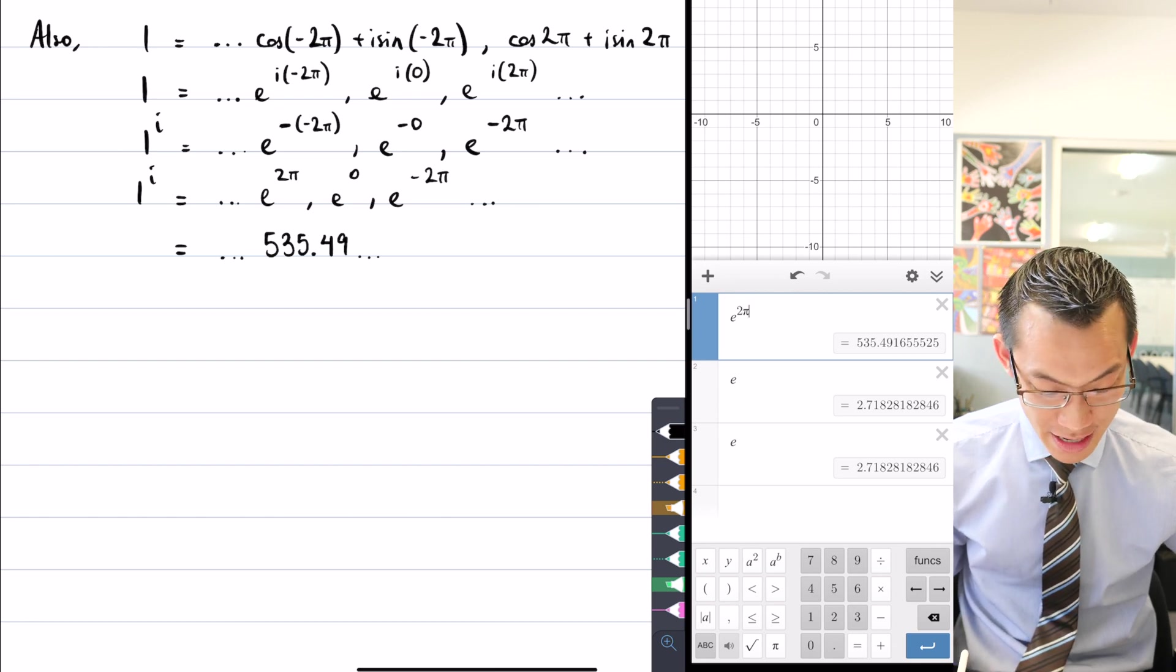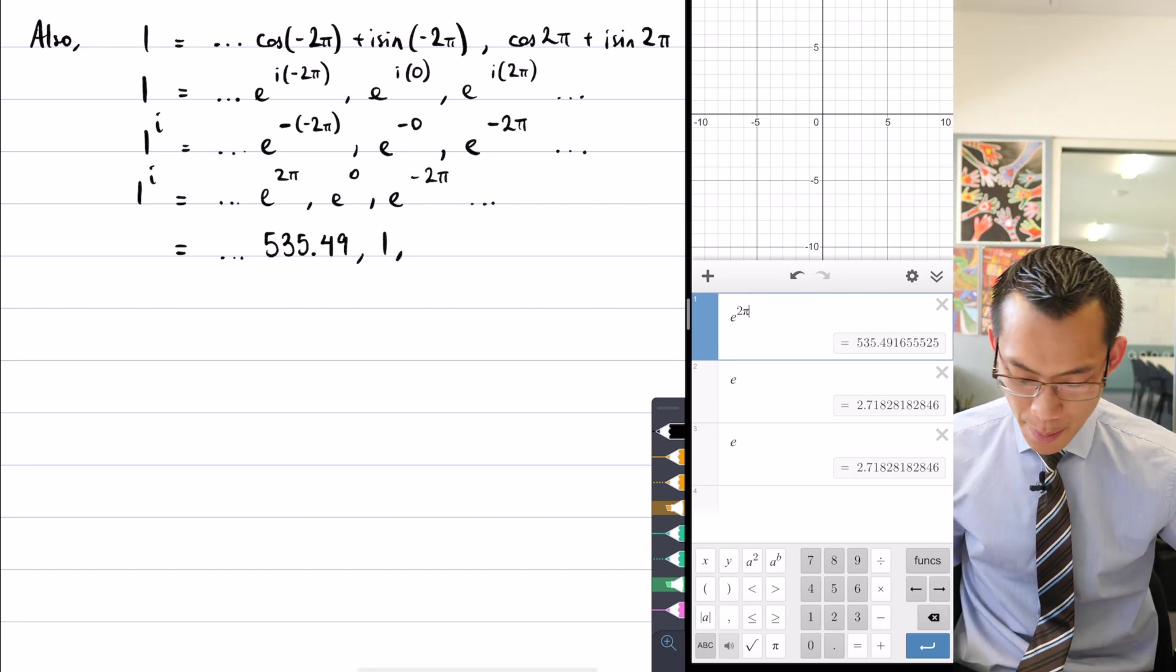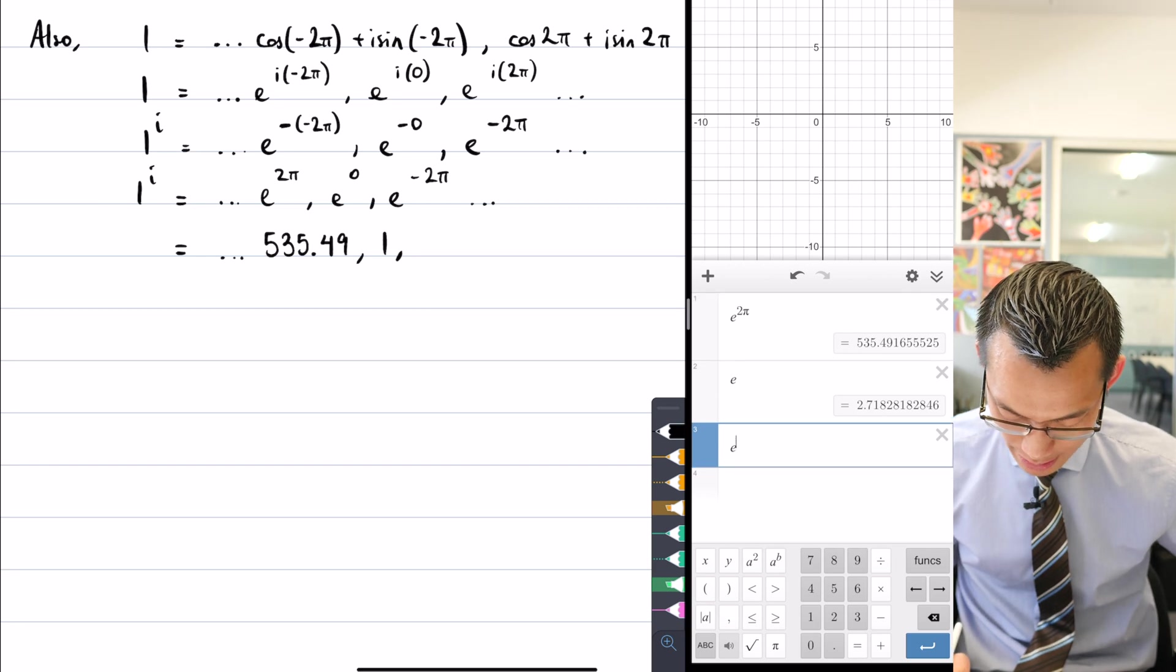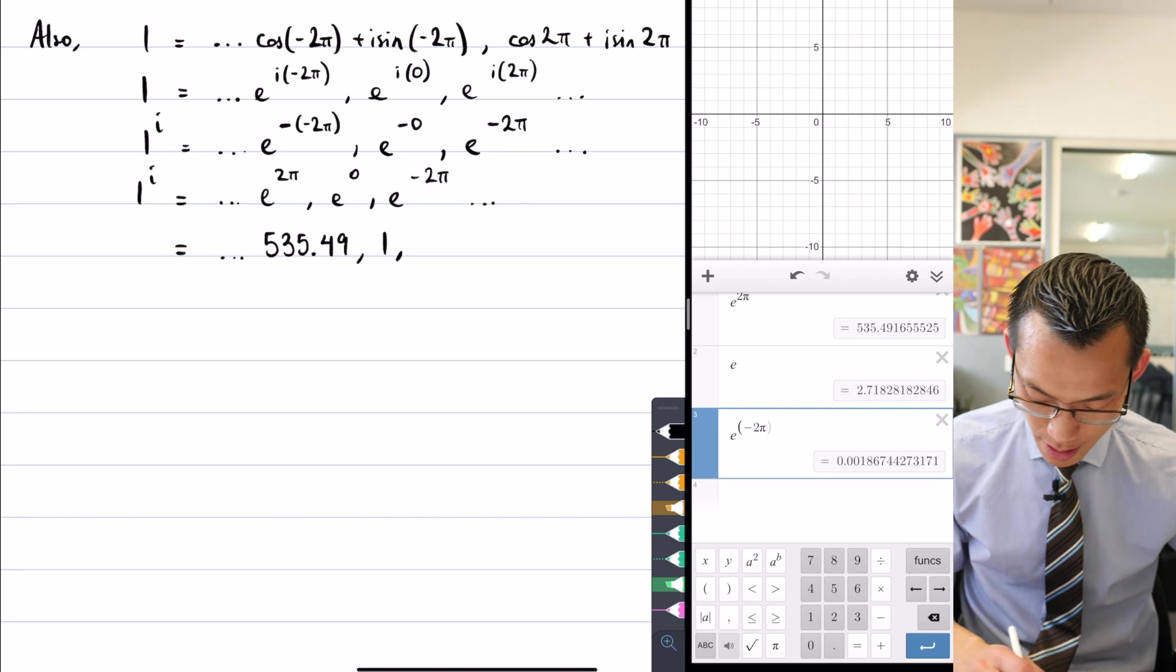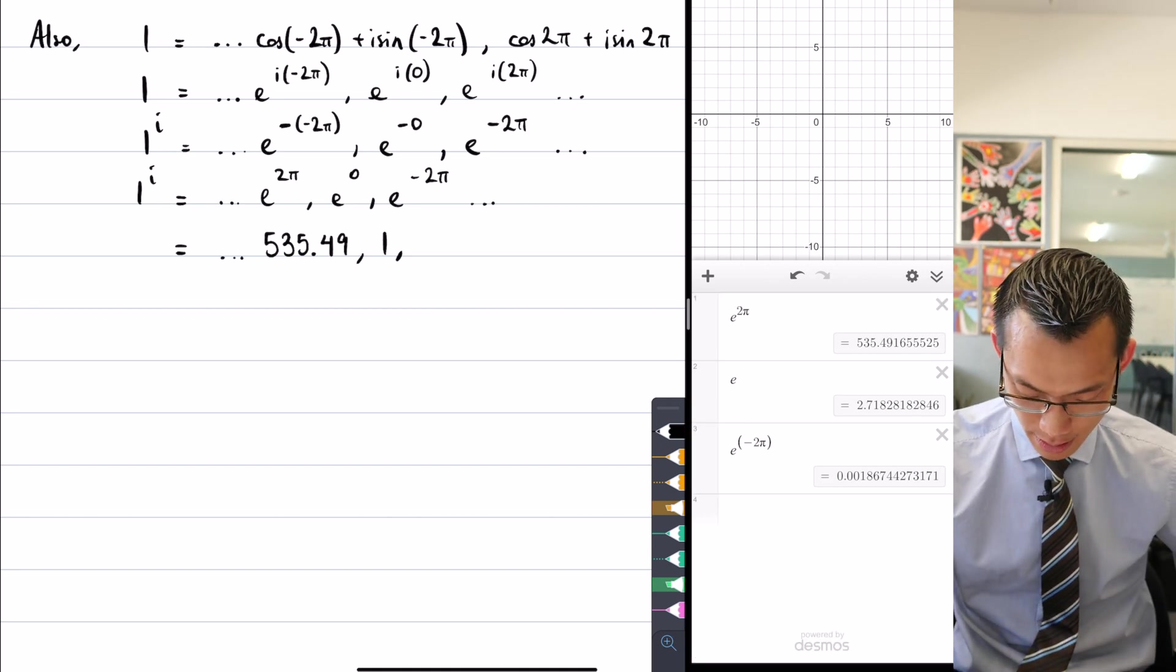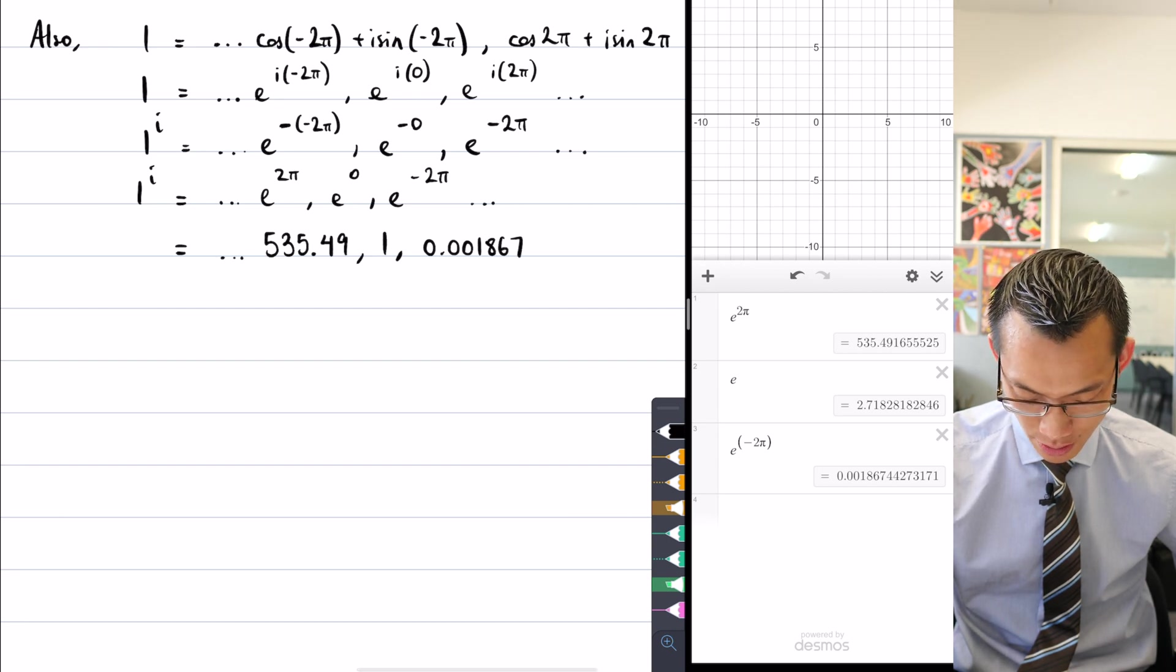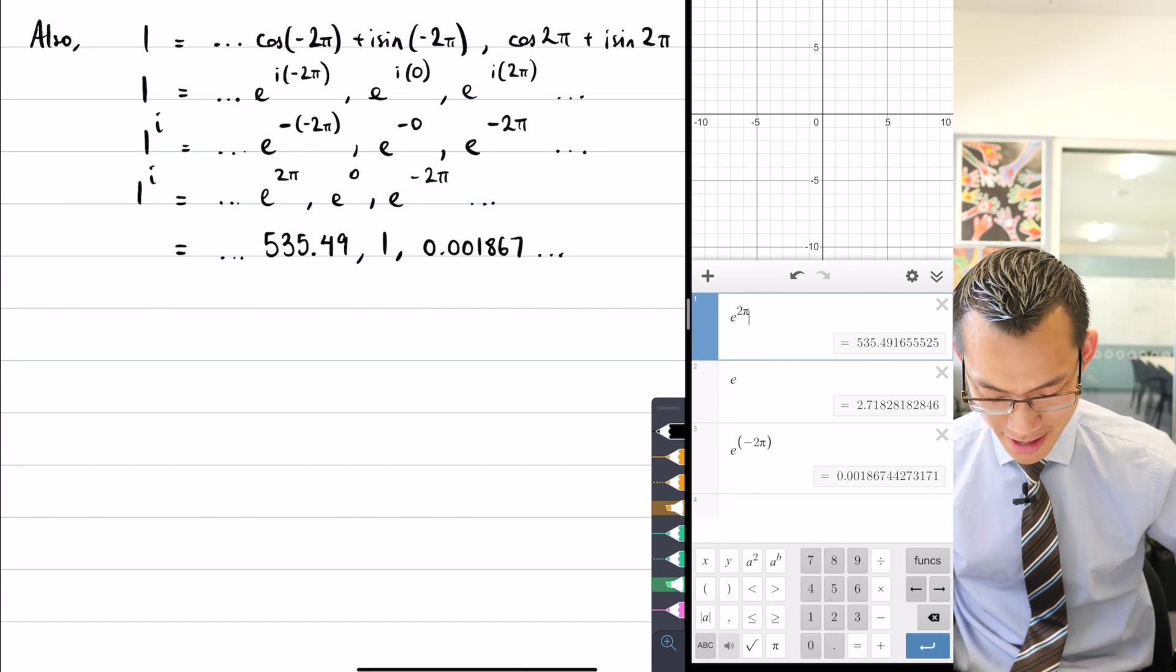Then I've got e to the power of zero, I actually don't need my calculator for that, that's just one. And then I've got e to the power of negative two pi, so let's raise that to the power of negative two pi. And I'm getting zero point zero zero one eight six seven. Wow, bananas.